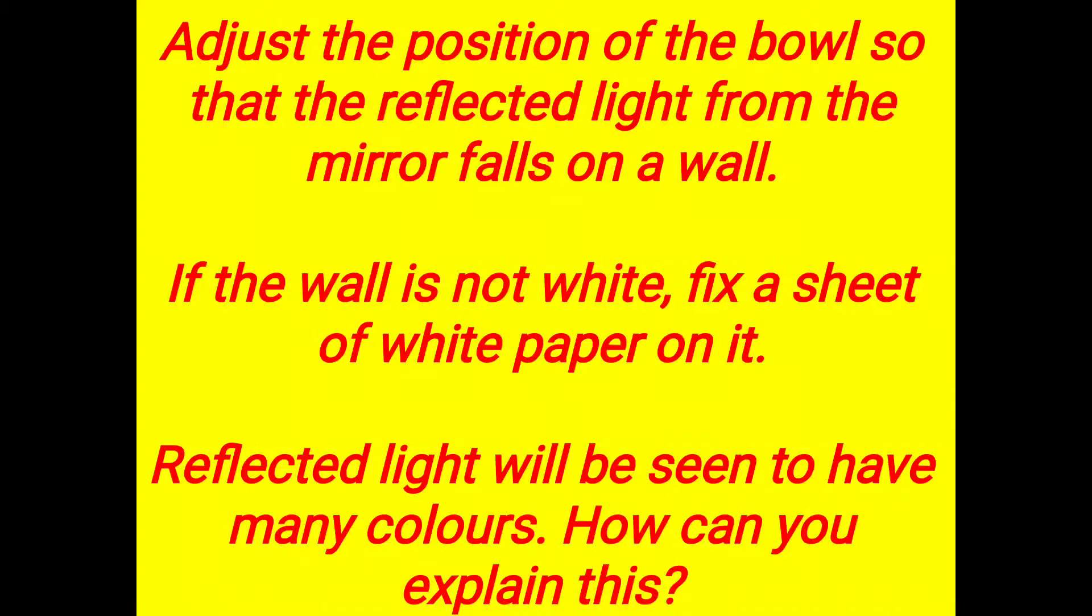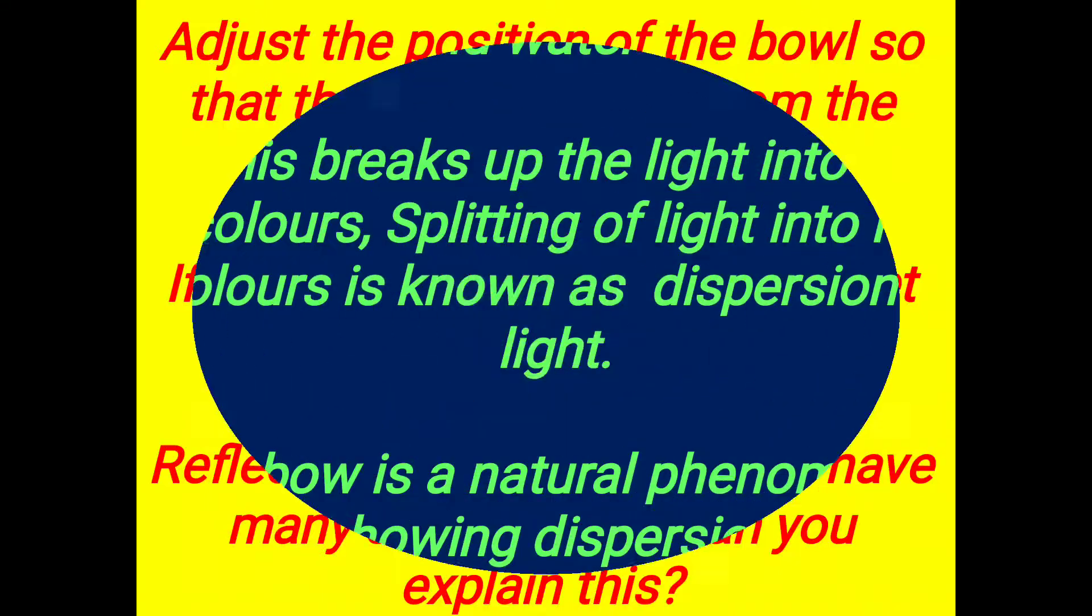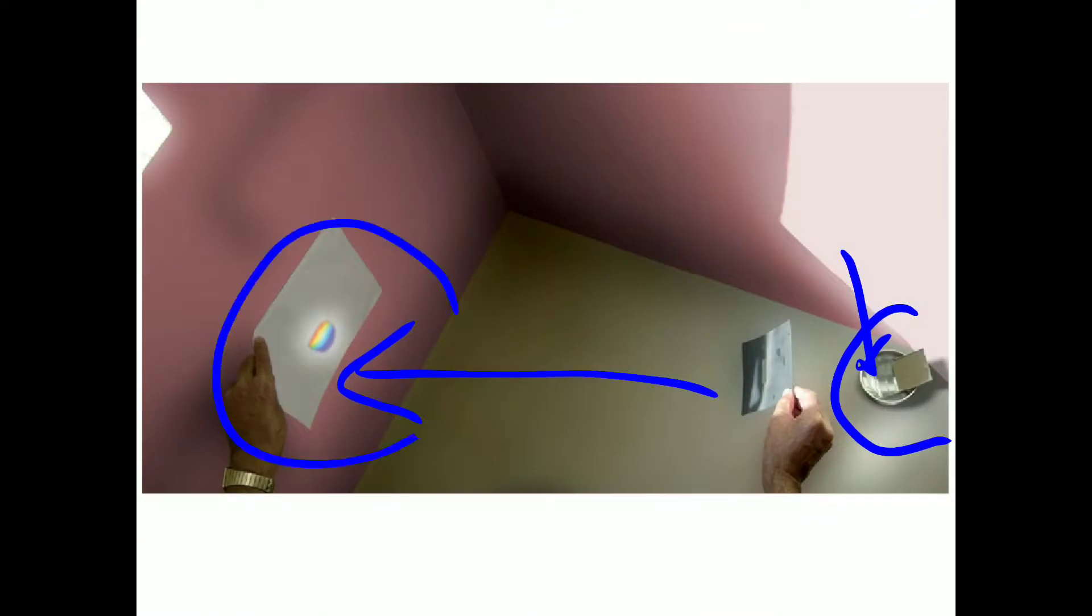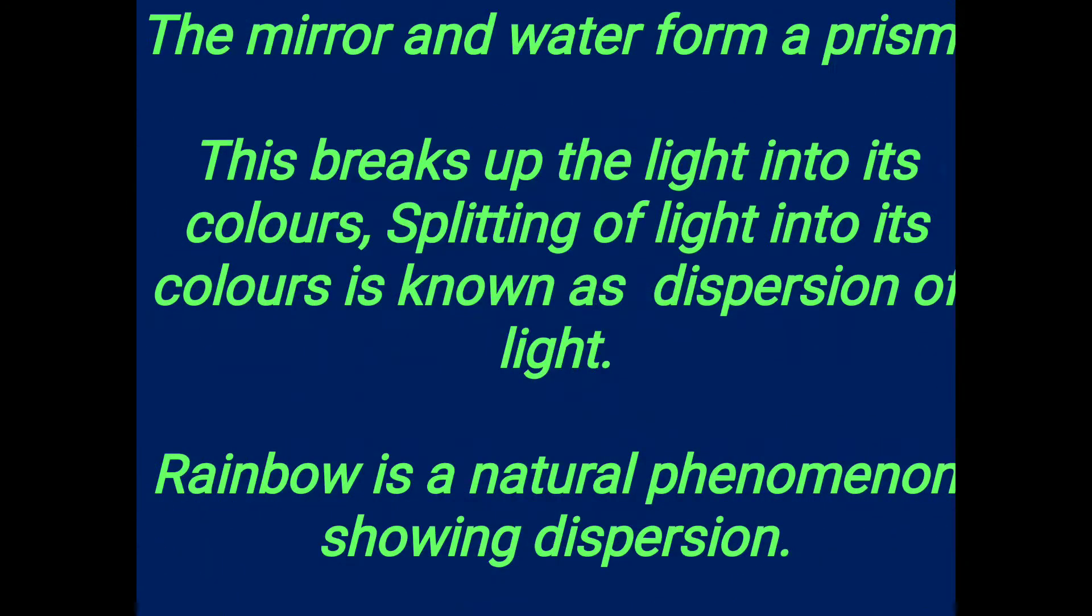The reflected light will be seen to have many colors - we can see the seven colors. The mirror and the water form a prism. This breaks the light into its colors. Splitting of light into its colors is known as dispersion of light.